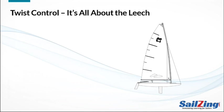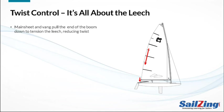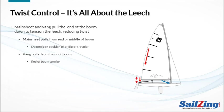How do you control twist? As we said earlier, you do it by controlling the leech. The mainsheet and the vang are the two primary controls, and they both work by pulling the end of the boom down to tension the leech. The mainsheet pulls the boom down from either the end or the middle of the boom — if you have a rear traveler or boom bridle, the mainsheet pulls directly down on the end of the boom; if you have a center traveler, it's pulling down on the center of the boom. The vang pulls down from the front of the boom, and if the boom can flex, the end will be able to rise even with the vang tight.